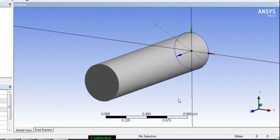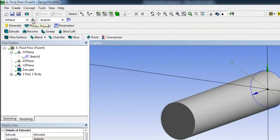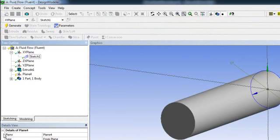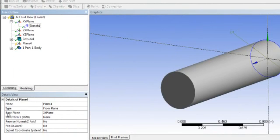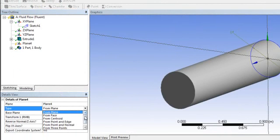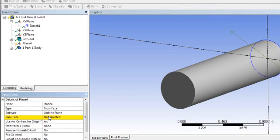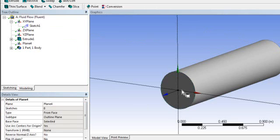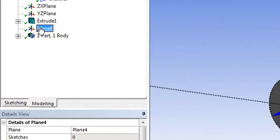Now we will develop the methane injector. We will draw the methane injector on this plane. First of all you have to define a plane. Go to here, new plane, select this new plane. Here in the detail view option you have the type, so here you have what types of plane you want. I want from phase, so select phase. It will ask you what is the base phase for your new plane. I want to draw here in this plane, so select this base plane and select this phase and apply and then generate. Now you have a new plane here.